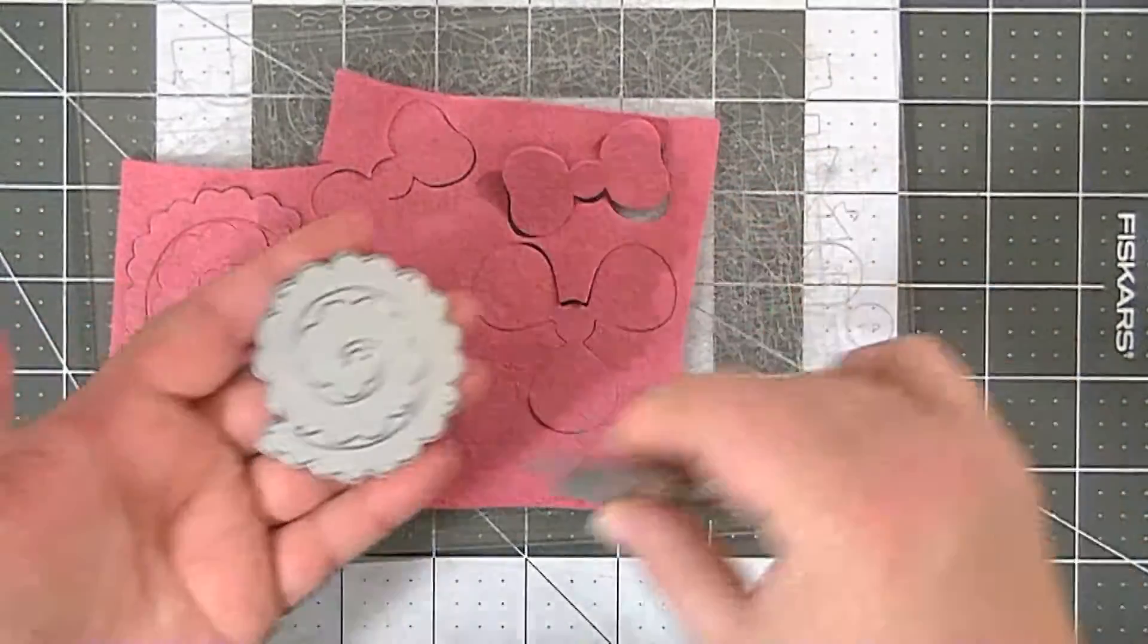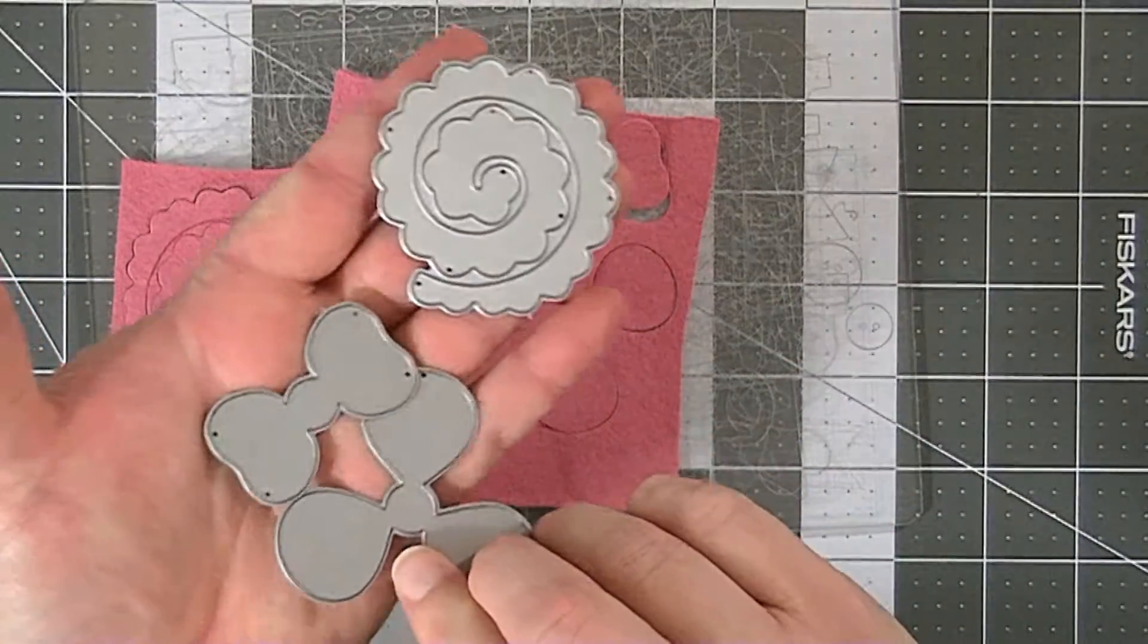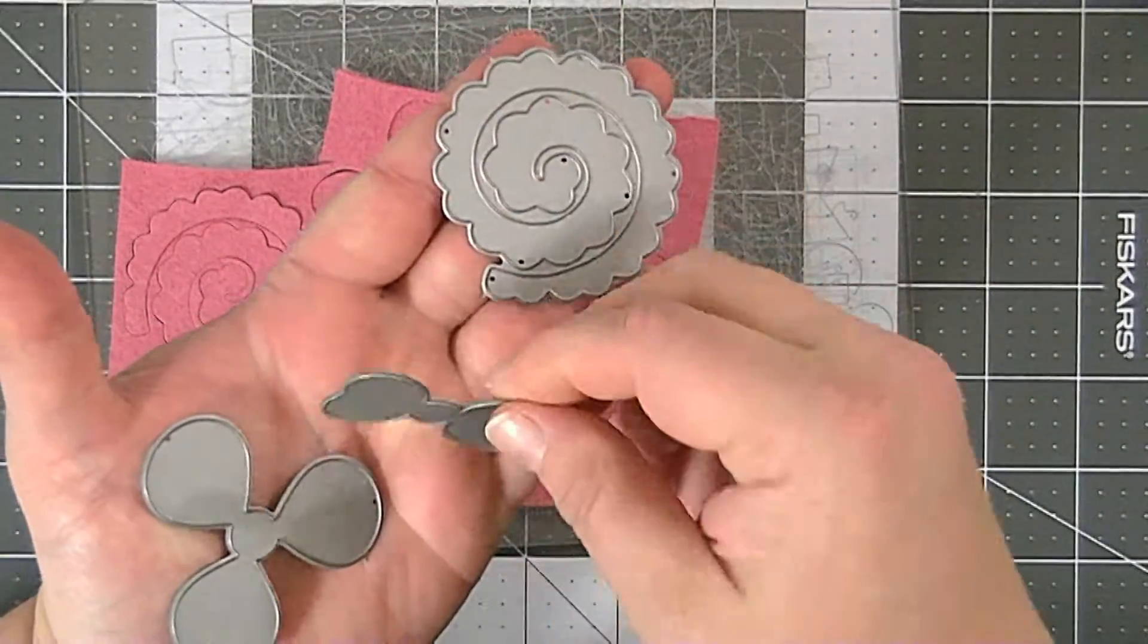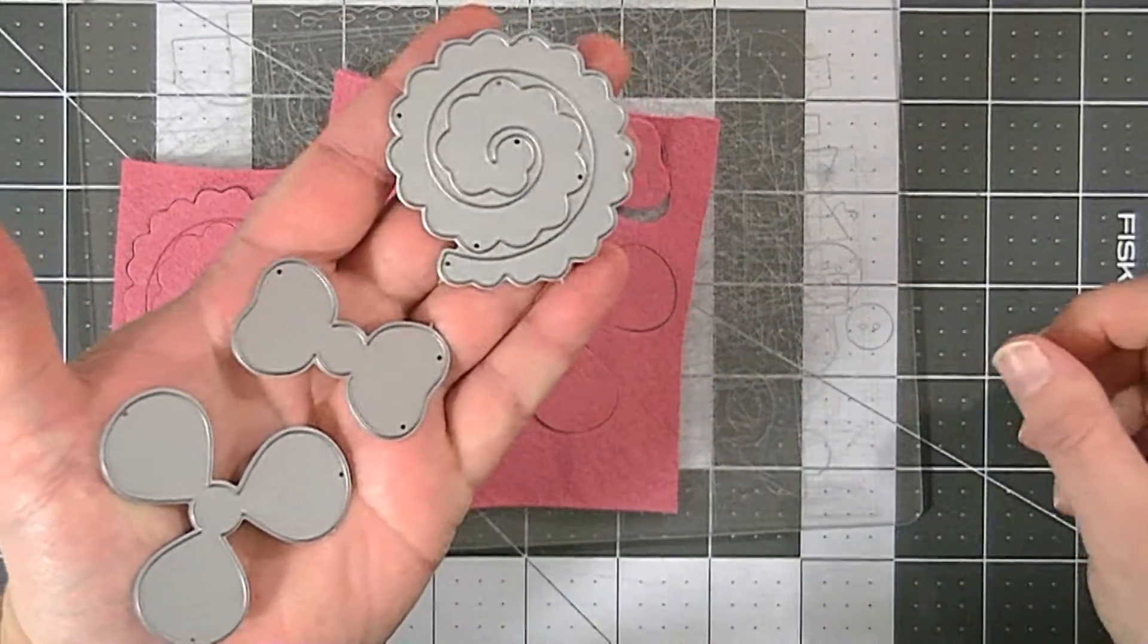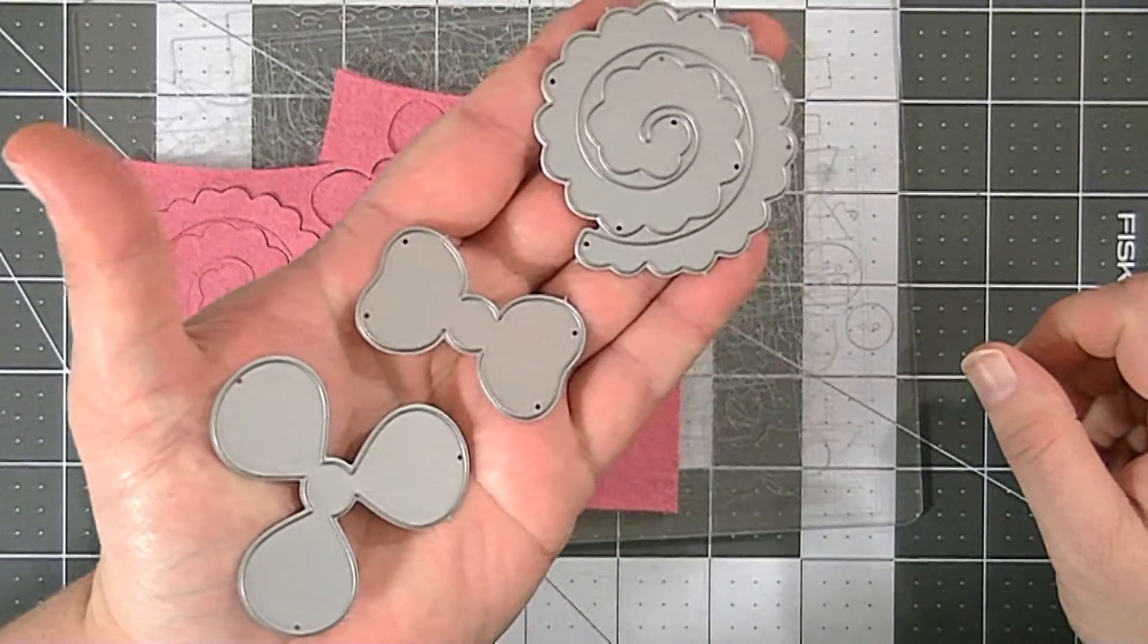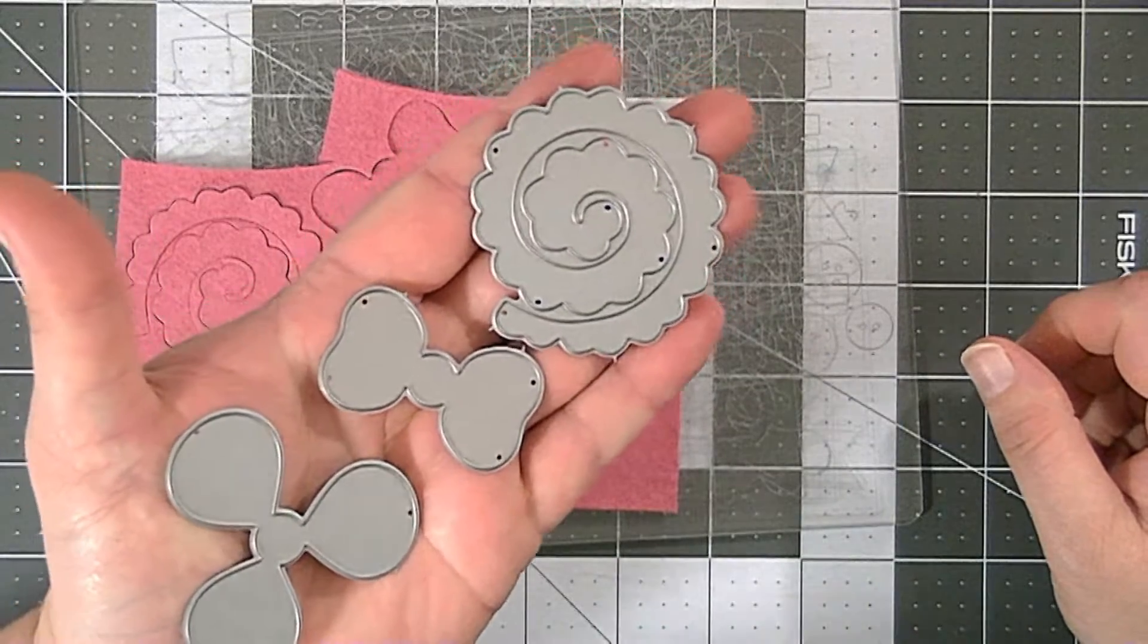I made them out of felt using this die. It's from My Favorite Things, and it's called the Hybrid Camellia die. It comes with these three pieces, and I'm going to show you how to make one today.